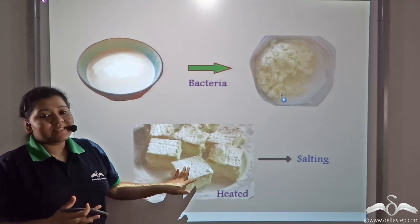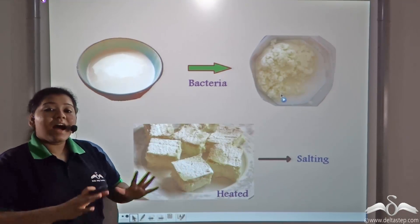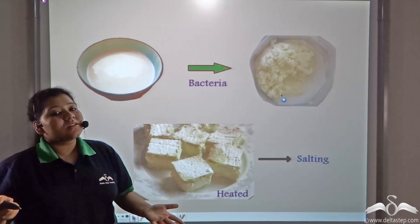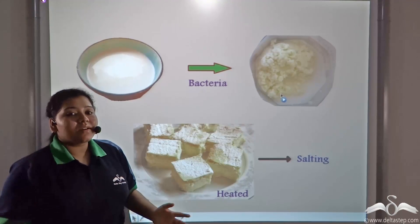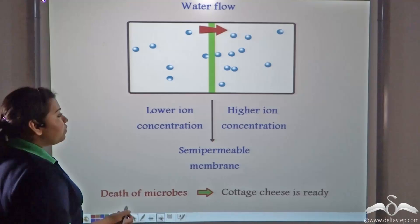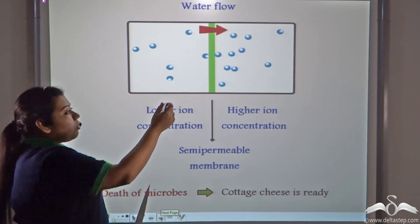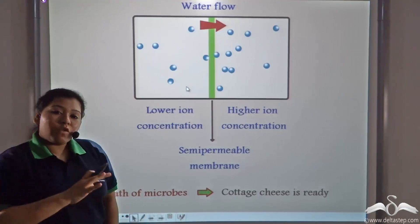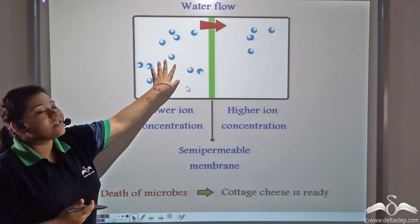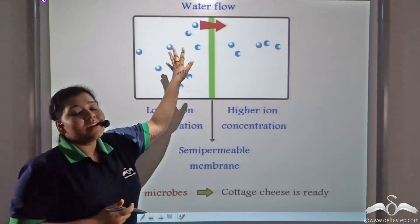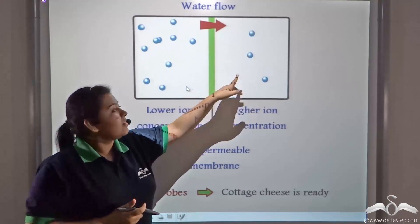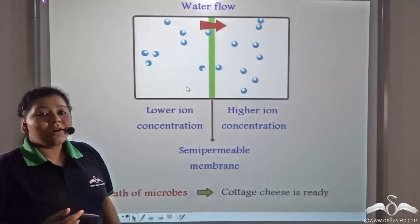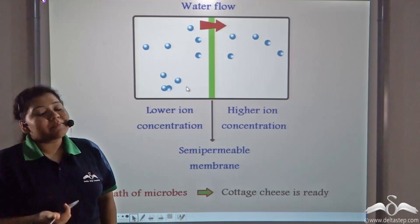The high concentration of salt outside draws the water out of the curd by the process of osmosis. Osmosis is the process by which water moves from a high concentration area to a low concentration area across a semi-permeable or selectively permeable membrane.